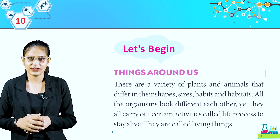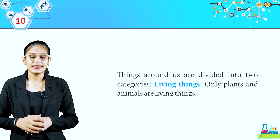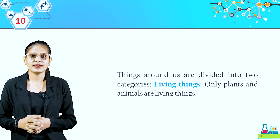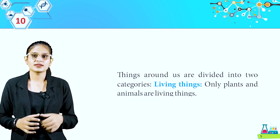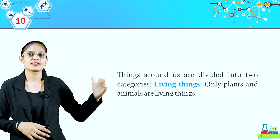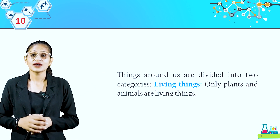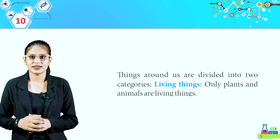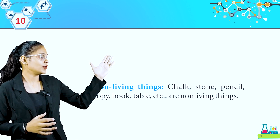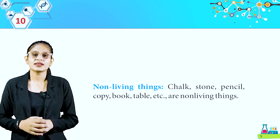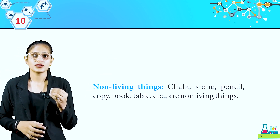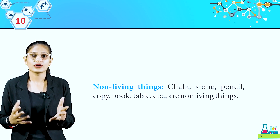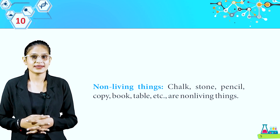Things around us are divided into two categories: living things and non-living things. Only plants and animals are living things. Non-living things include chalk, stone, pencil, copy, book, table, etc.